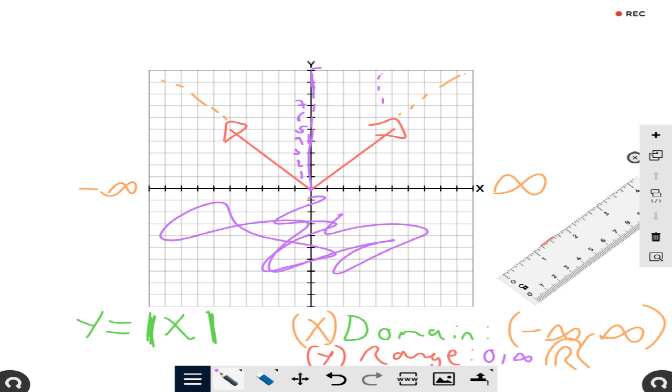And zero is going to be included. The infinity is going to be open, it's going to be parentheses. And technically, this is domain and range. We're going to do another example.